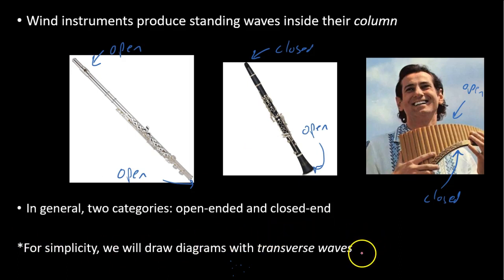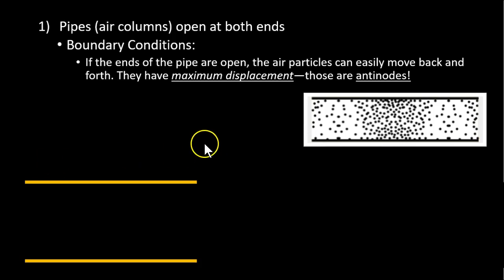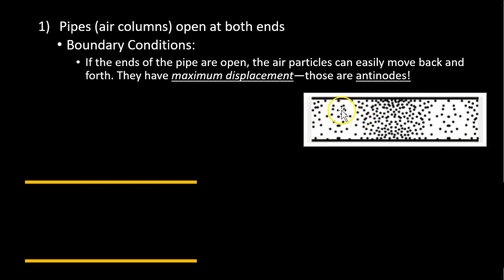One last point: we will often draw standing waves as transverse, even though with these pipes — these air columns — they are in fact longitudinal sound waves that are vibrating. It's very difficult to draw all those little dots, but we'll see some examples of both. OK, so there are two types. Let's look at the first type: pipes or air columns that are open at both ends, like our flute example. We're going to go back to drawing standing waves, but first we have to make sure we're clear on the boundary conditions. Here are those air particles going back and forth.